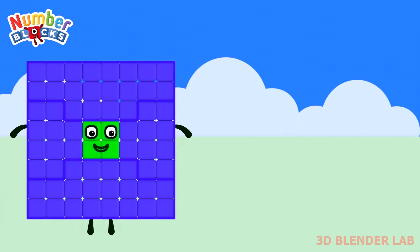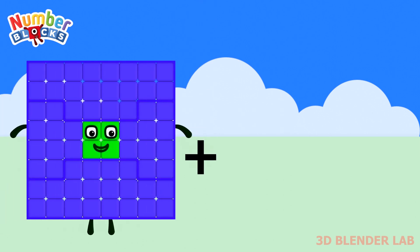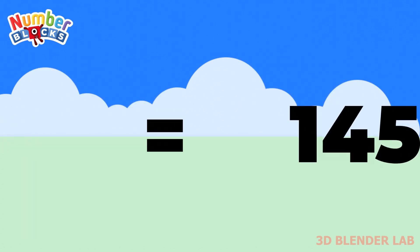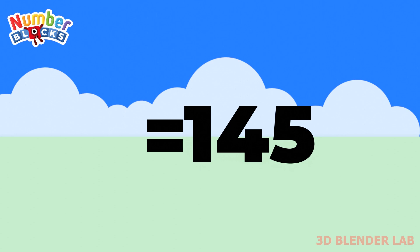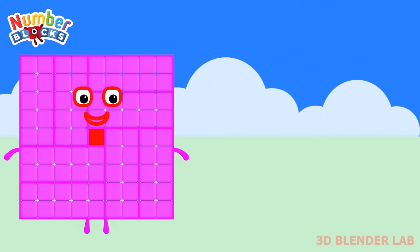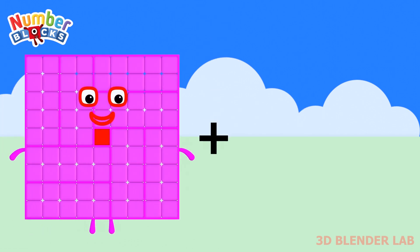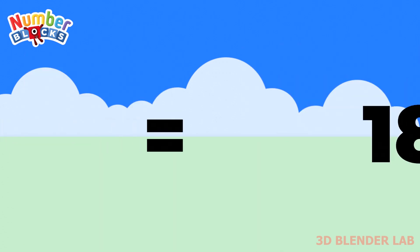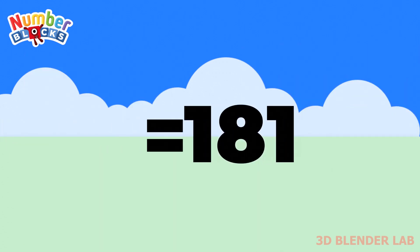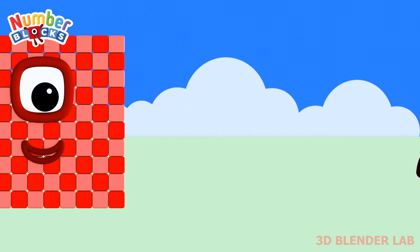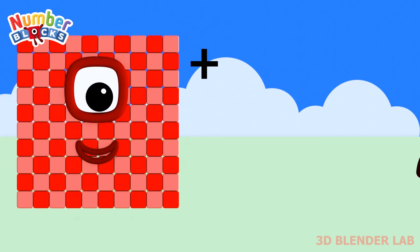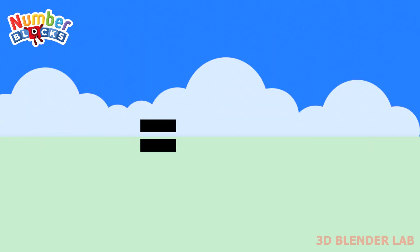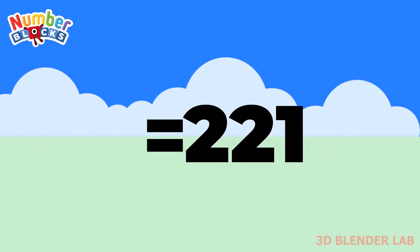64 plus 81 equals 145. 81 plus 100 equals 181. 100 plus 121 equals 221.